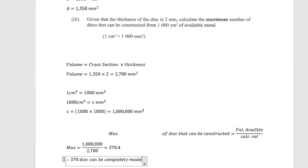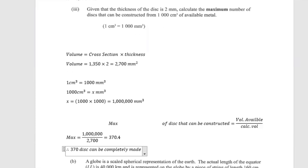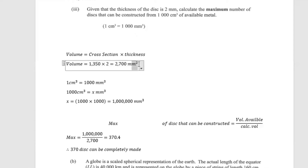So the answer is 370 discs. To summarize: the available metal was given as 1000 centimeter cubed, which we converted to 1 million millimeters cubed. We calculated the volume of one disc as 2700 millimeters cubed, then divided 1 million by 2700 to get the maximum number of complete discs that can be made.